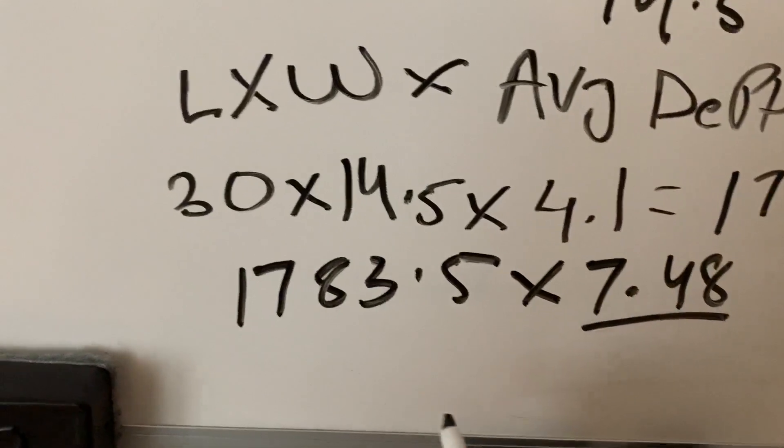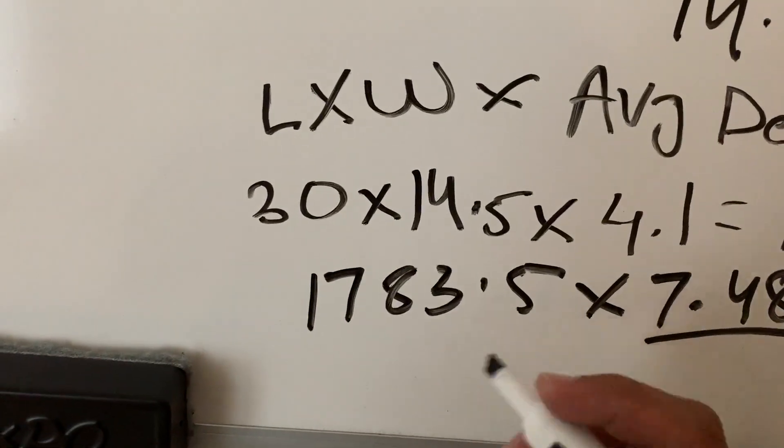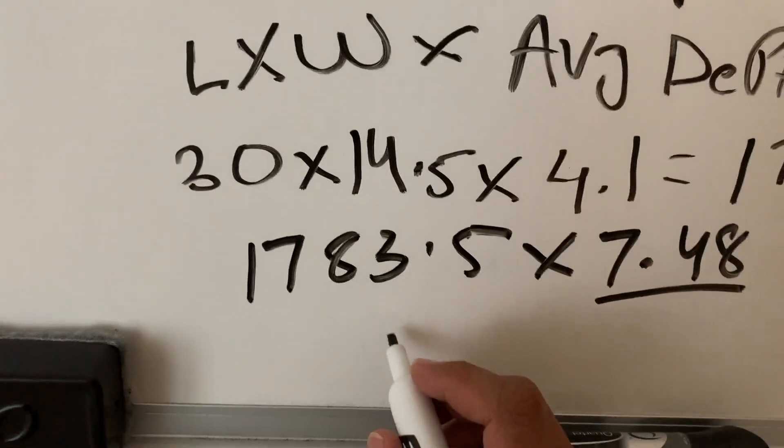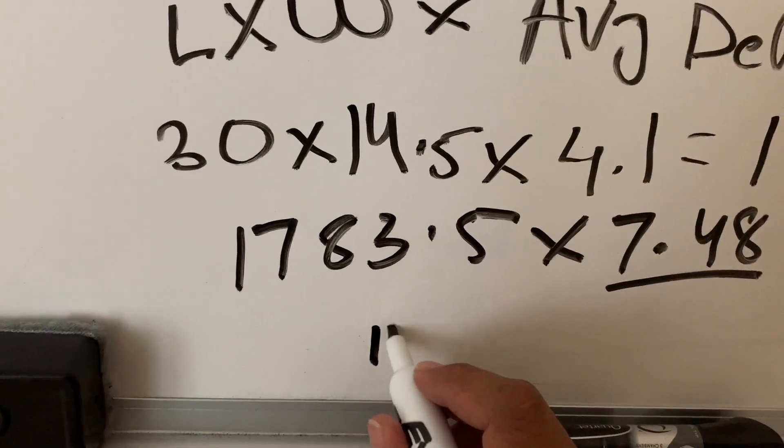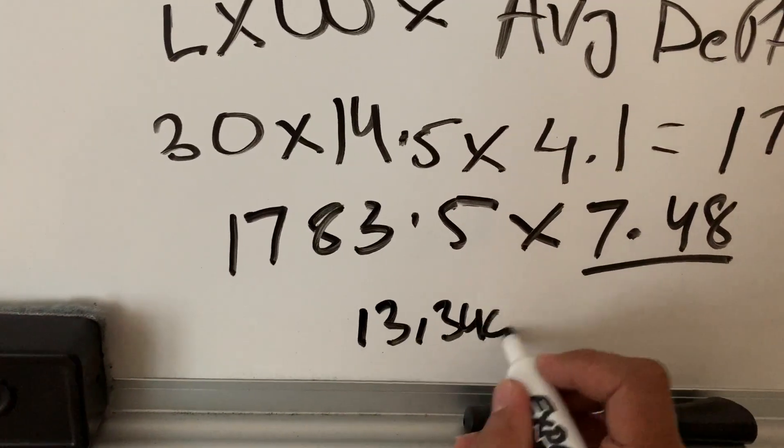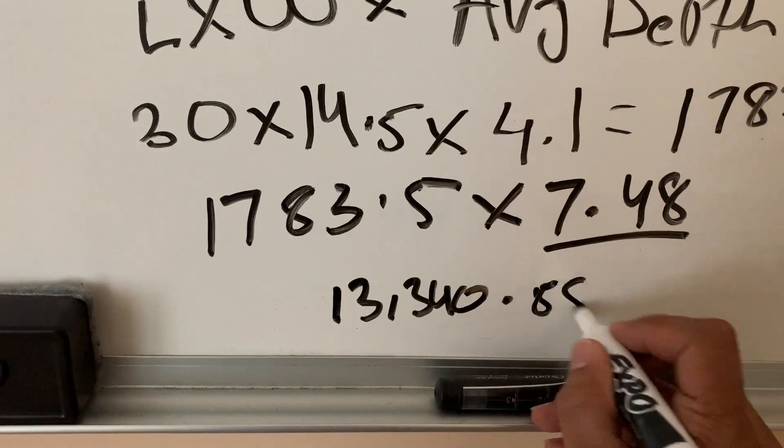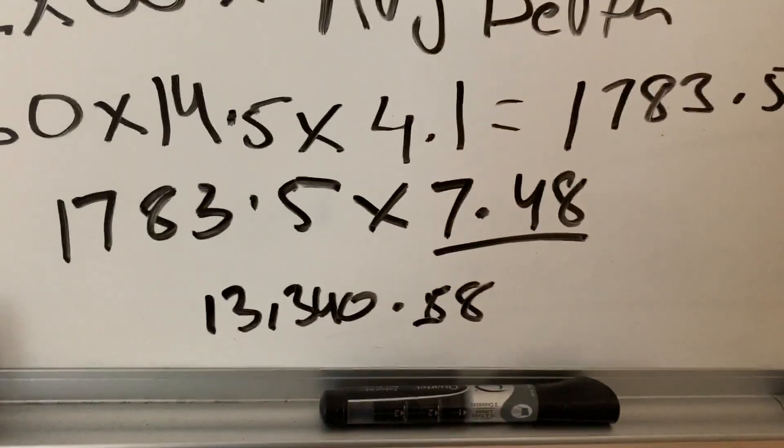Once you multiply these two together, you're gonna get the total number of gallons your pool holds. In my case, it comes out to be about 13,340.88 gallons.